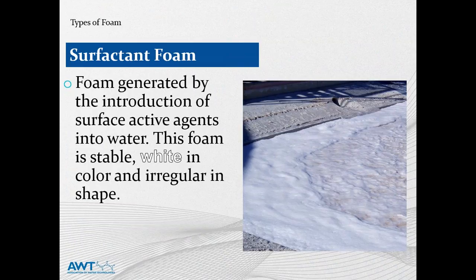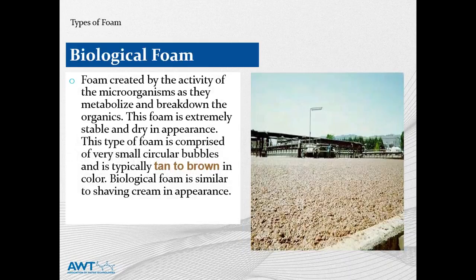Surfactant foam develops when surface-active ingredients are introduced into water. An everyday example is the foam created when you run a bubble bath, or if you've ever shaken a bottle of glass cleaner like Windex. This type of foam is typically white and irregular in shape. Another type of foam often encountered, particularly in municipal settings, is biological foam. This foam is created when microorganisms metabolize and break down organics; it typically looks dry and is a tan or brown color. In a biological system, a little foam is actually quite typical, but at times it can get out of control. Dosing a defoamer will alleviate the foam, however excessive foam is often an indication of an underlying problem such as sludge age.